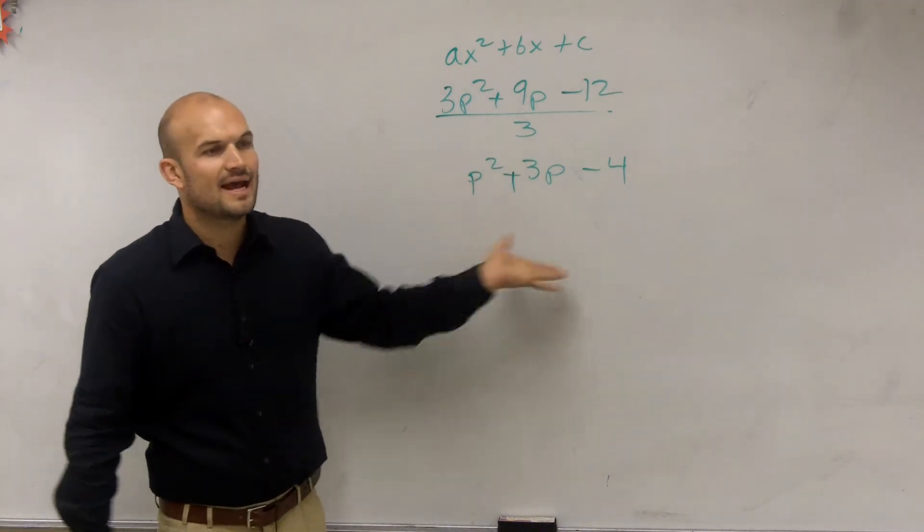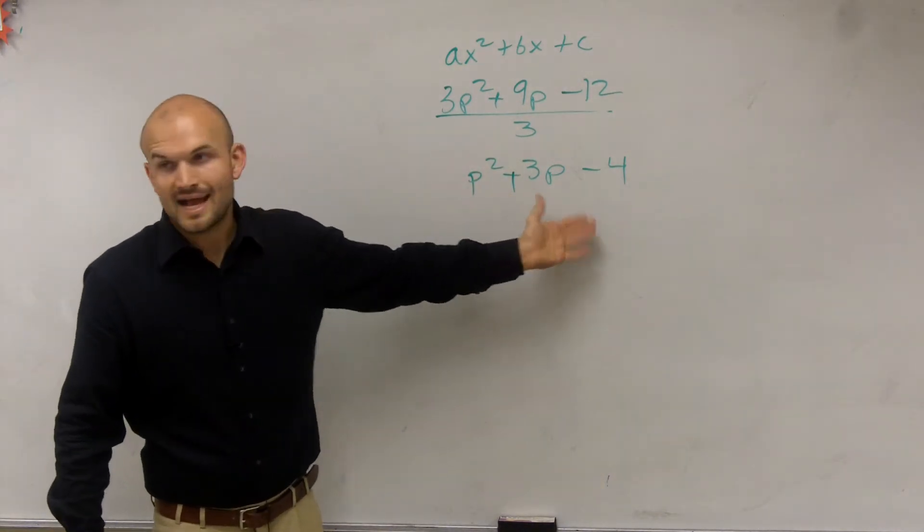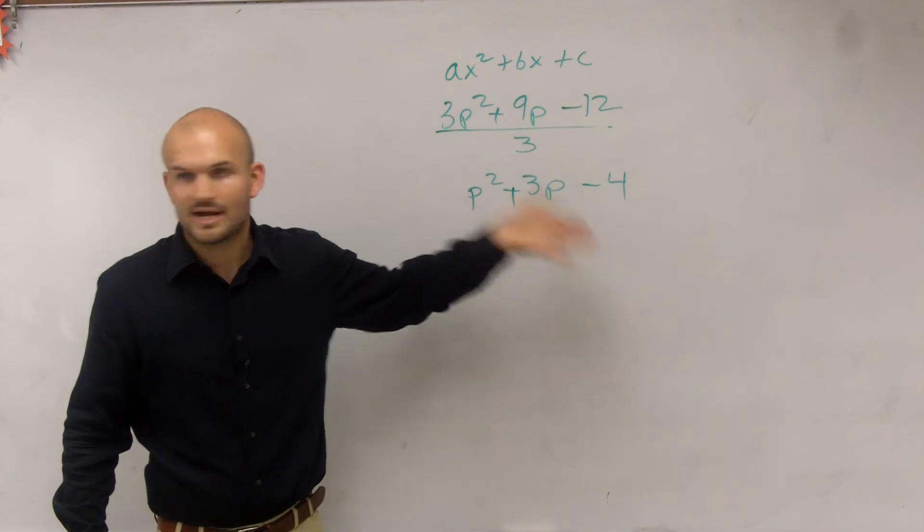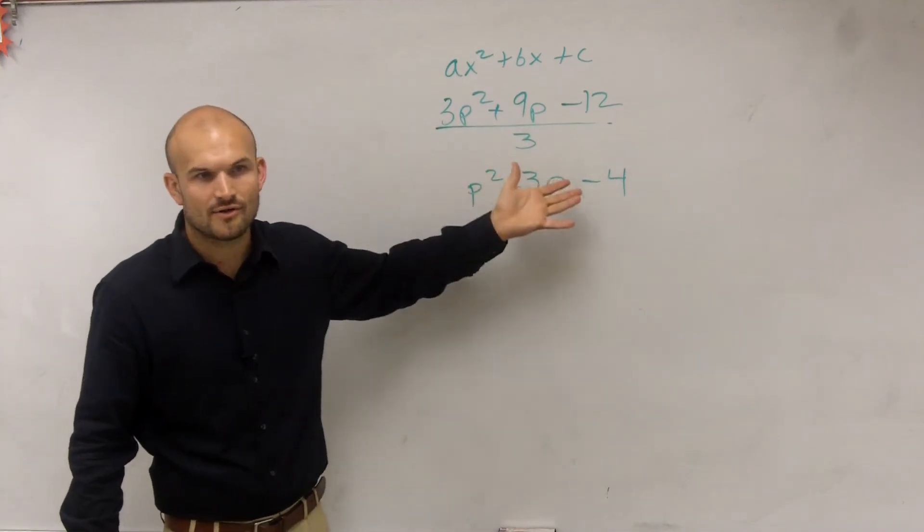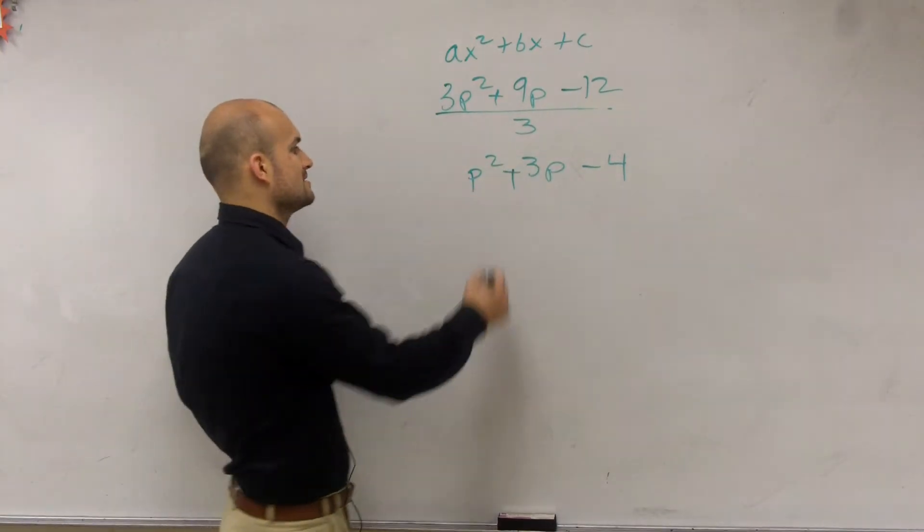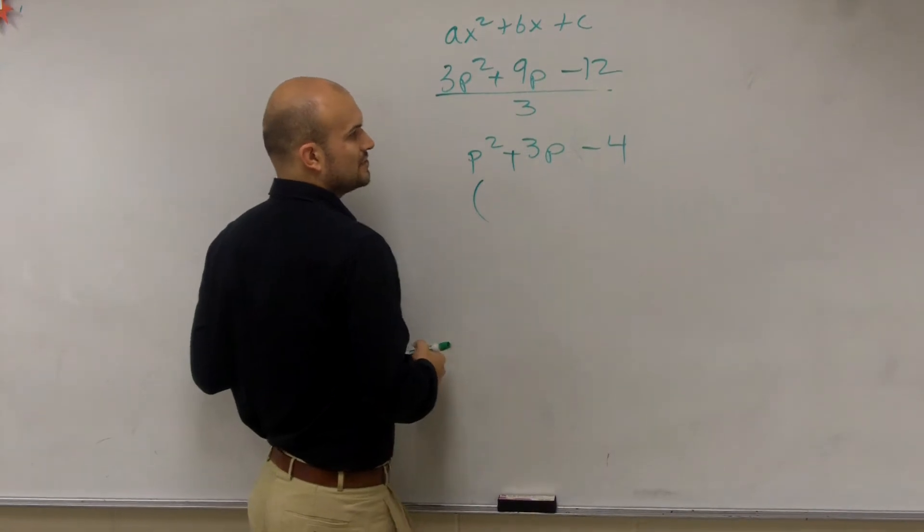Now I write this, and can I write this now as a product of two factors, right? Because you just factor out a three, it's just a factor of it. So can I write this as a product? Yes. Now to write that as a product of your two factors,